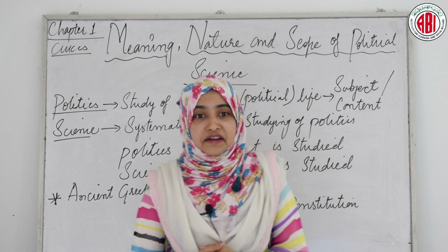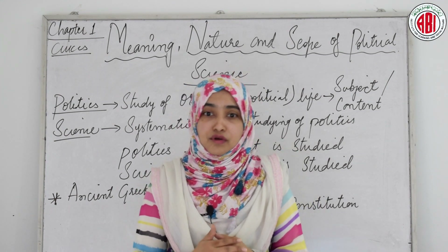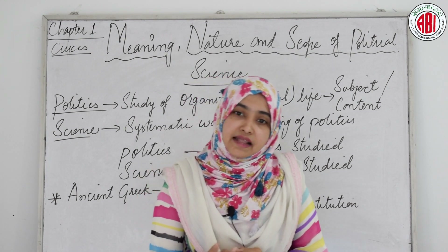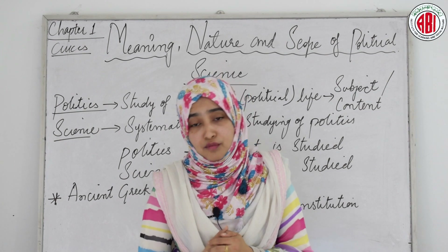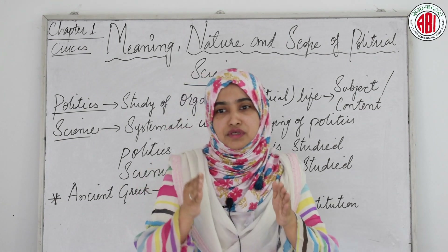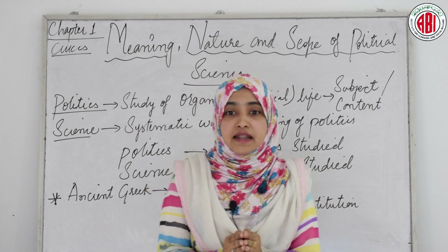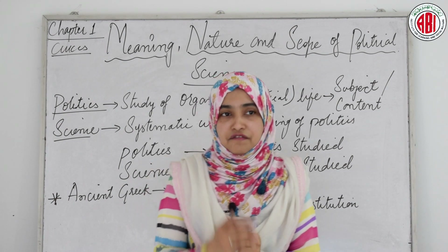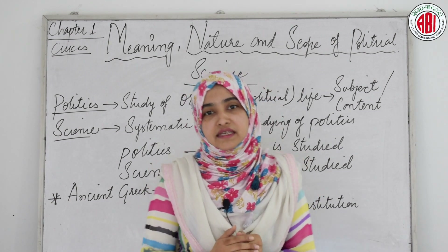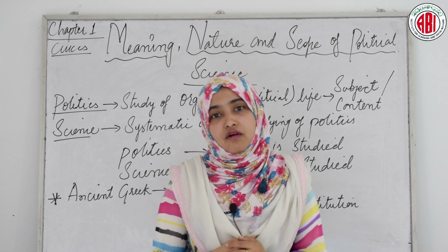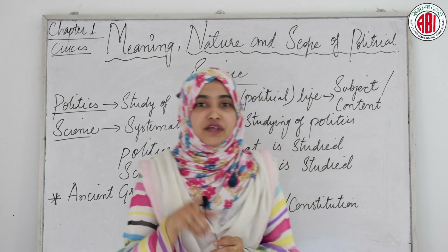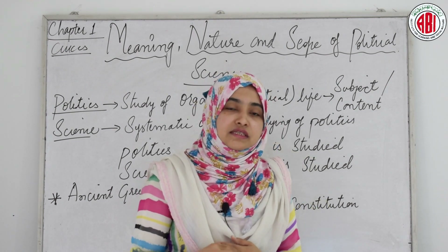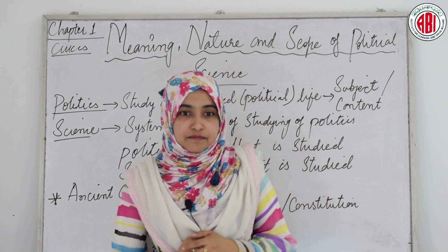The next great thinker is Paul Janet, who defined political science as 'the part of social sciences which treats of the foundation of the state and the principle of government.' He defines political science as a part of social sciences concerned with the foundation of the state and the principles of government. Different thinkers have defined political science in different ways, but the main thing is that all of them base political science on the state and government.